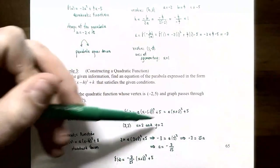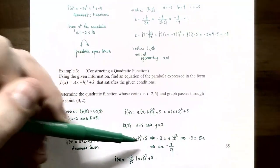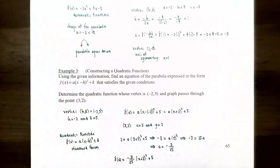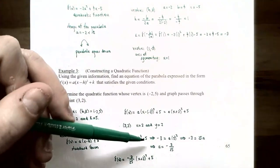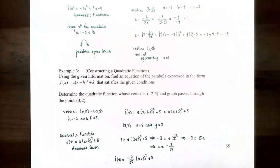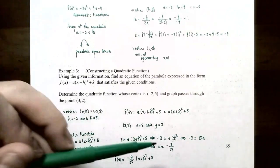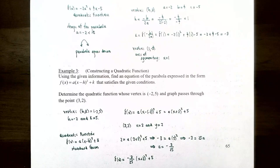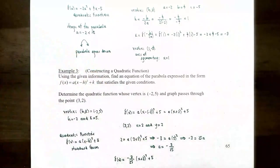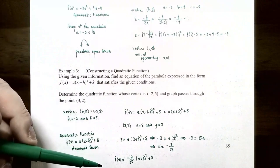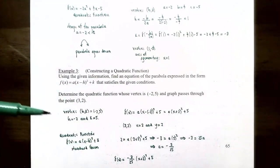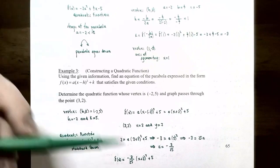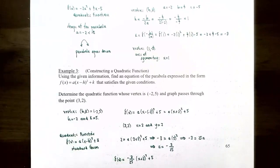So the function that satisfies the conditions — vertex at (-2, 5) and passing through (3, 2) — is f(x) = (-3/25)(x + 2)² + 5. This has a vertex of (-2, 5) and also passes through (3, 2).